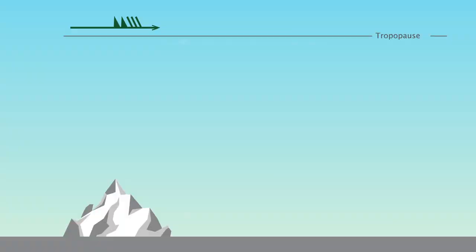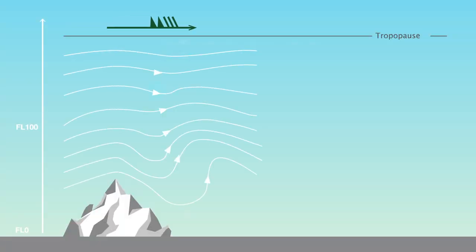Mountain waves cause a specific type of turbulence and wind shear. The relief modifies the airflow from the ground up to the tropopause in two different ways.